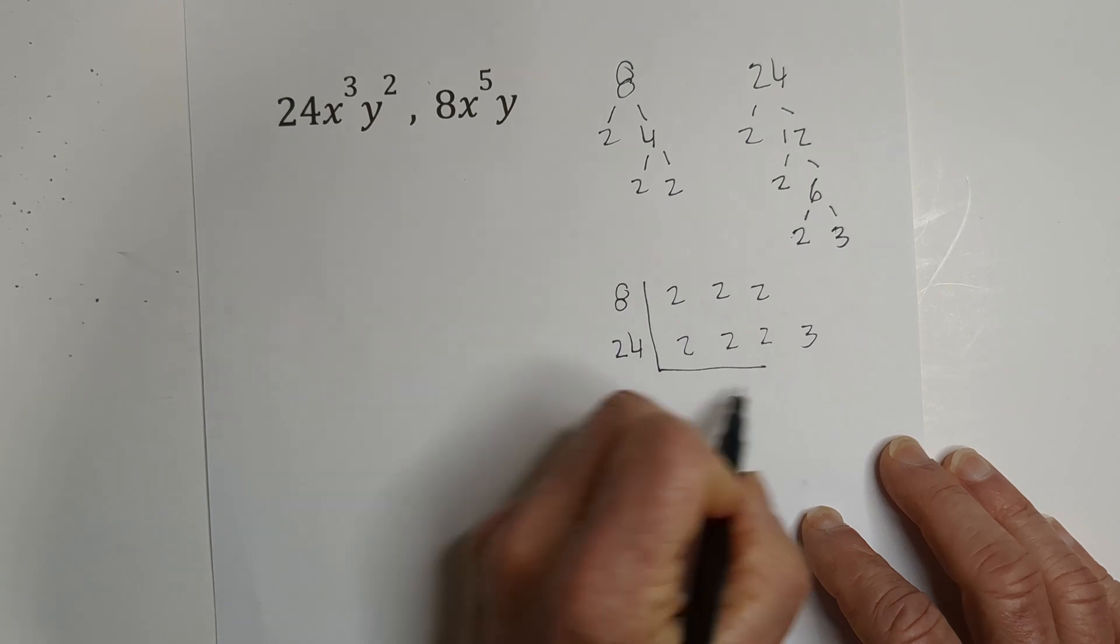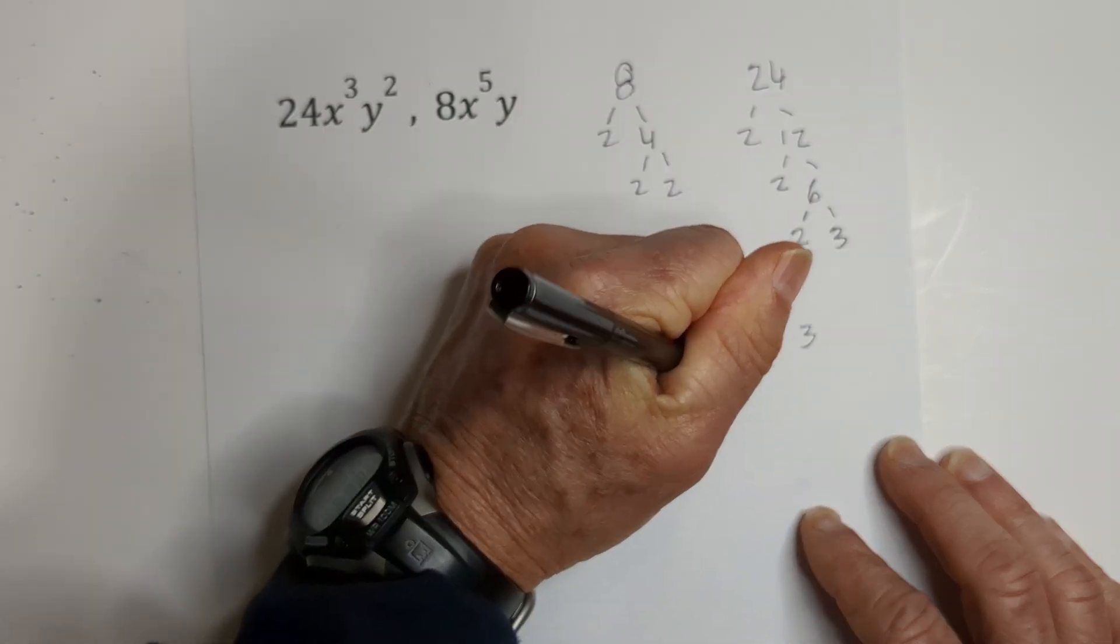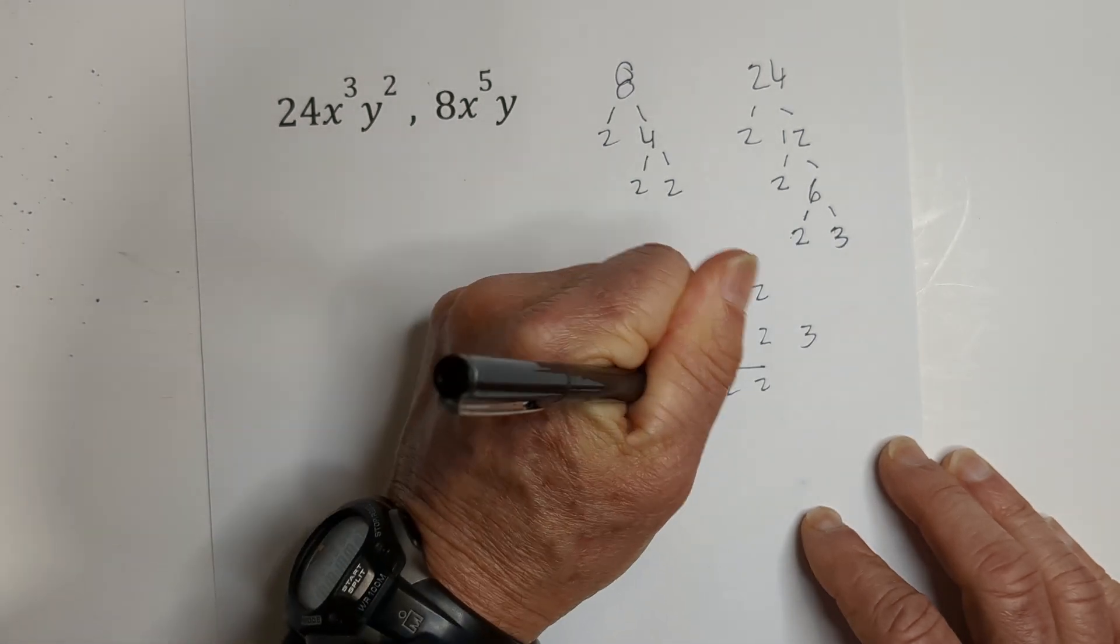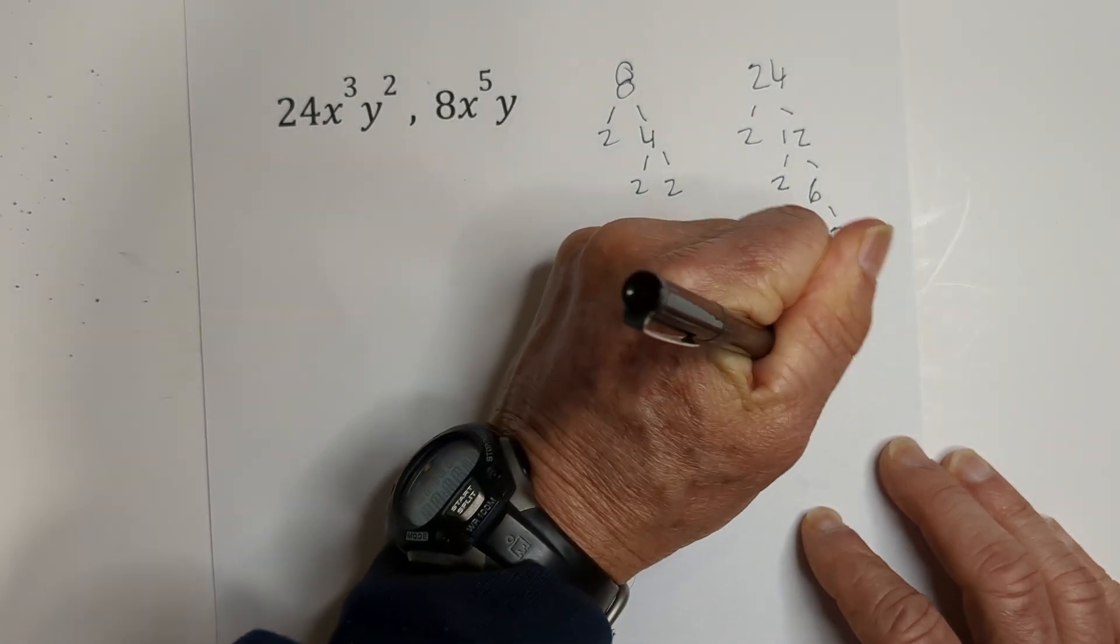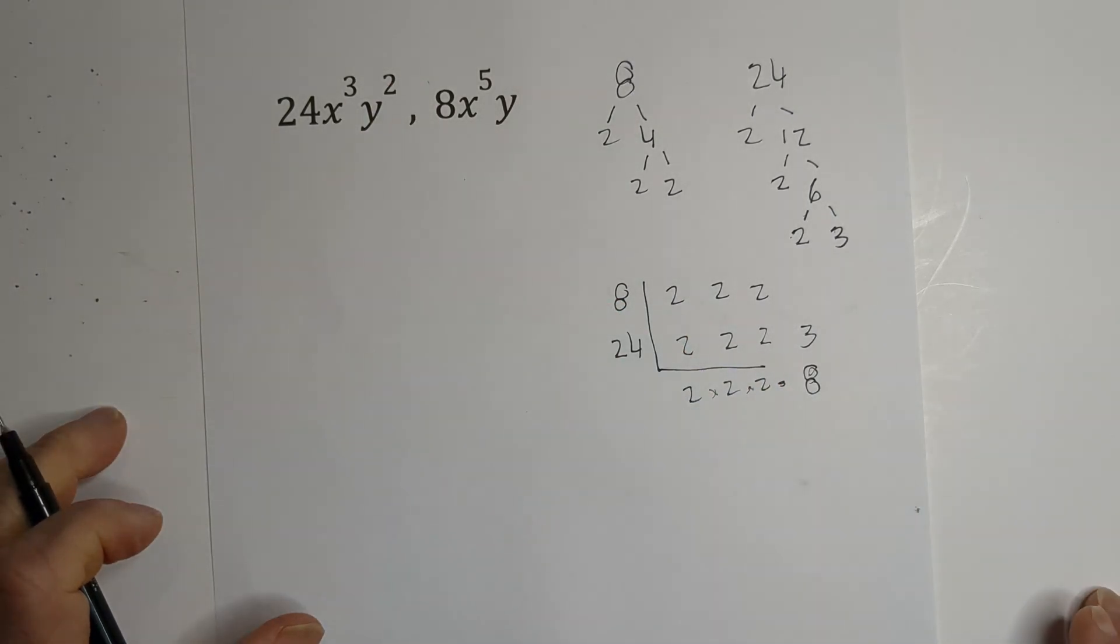Remember, you must have 2 in the columns to bring it down. So 2, 2, 2. And so when you multiply this together, it is 8. I know some of you can glance and see that 8 is the greatest common factor, but I just wanted to show you how you do that if you're doing a factor tree.